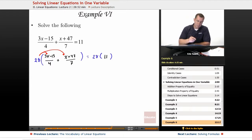28 over 4 would give us a 7, so that's still going to be multiplied by that 3x minus 15 part. Then when it distributes on the second piece, 28 all over 7 reduces, and that goes in there 4 times, so we still have a 4 multiplied by x plus 47. And then over on this side we have 28 times 11, that's 308.